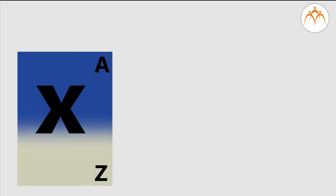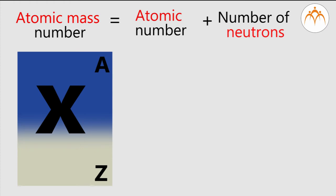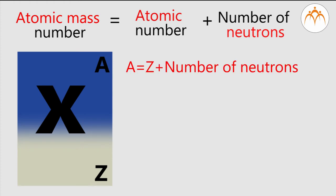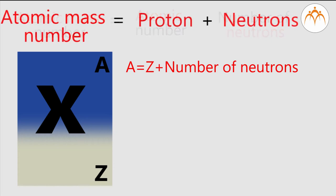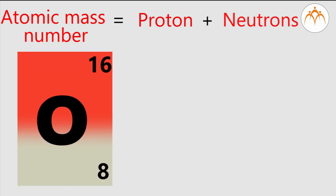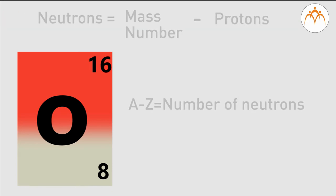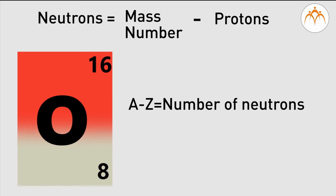Now let's see what atomic mass number is. The mass of an electron is very less — eighteen hundred times less compared to the mass of a proton and neutron. So the mass of an atom is mainly due to protons and neutrons present in the nucleus. Mass of electrons is so negligible it is not considered when calculating total atomic mass. So total atomic mass number is the total number of protons and neutrons in the nucleus. By calculating A minus Z, we can get the number of neutrons present in the nucleus.